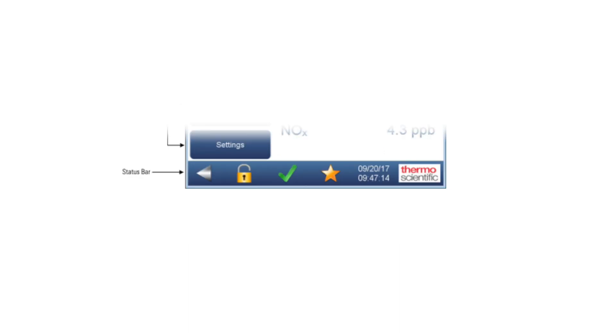On the bottom, the status bar includes a back button, access levels, help check for alarm statuses, a favorite button, and the current time.